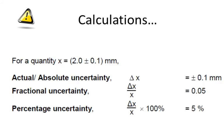Now, for calculations with uncertainty, the actual or absolute uncertainty for this quantity, for example, we've got something, it's a length, it's 2.0 millimetres plus or minus 0.1. So the absolute uncertainty would be plus or minus 0.1 millimetres.